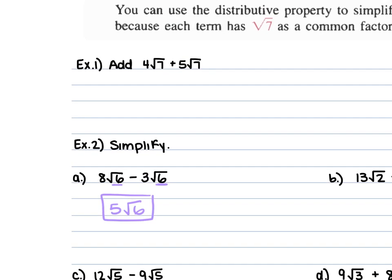For example 1, we had 4 square root of 7 plus 5 square root of 7. Those two radicals are the same, so we keep that and do the operation with the 4 and the 5: 4 plus 5 is 9. Keep the square root of 7, giving us 9 square root of 7.